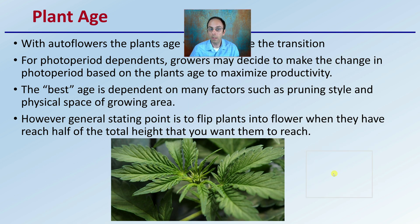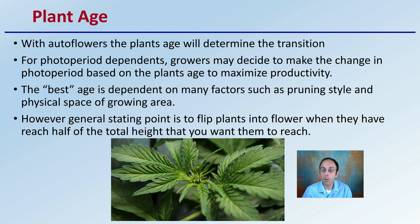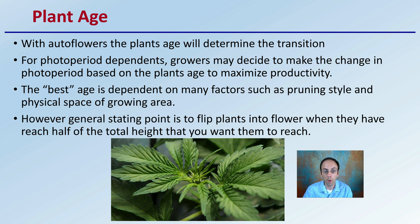Now, plant age. With autoflowers, plant age determines the transition point. For photoperiod dependent plants, growers may decide to make the change in the photoperiod based on the plant's age to maximize productivity and efficiency of their grow operation. The best age is dependent on many factors such as pruning style and physical space of the growing area. However, a general starting point is to flip plants into flower when they have reached about half their total desired height.